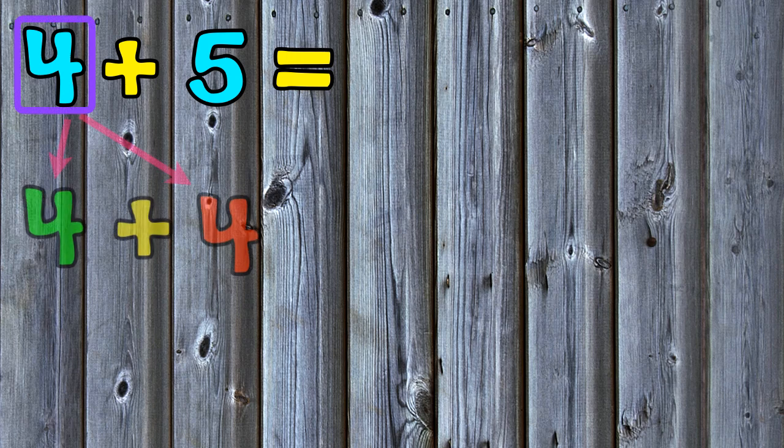Let's look at the example 4 plus 5. 4 plus 5 is a near double. To add this addition problem fluently, we can think of a doubles fact. To do this, we will add the smallest addend twice or double it. In this addition problem, the 4 is the smallest addend. I will double this addend to have an addition problem of 4 plus 4.